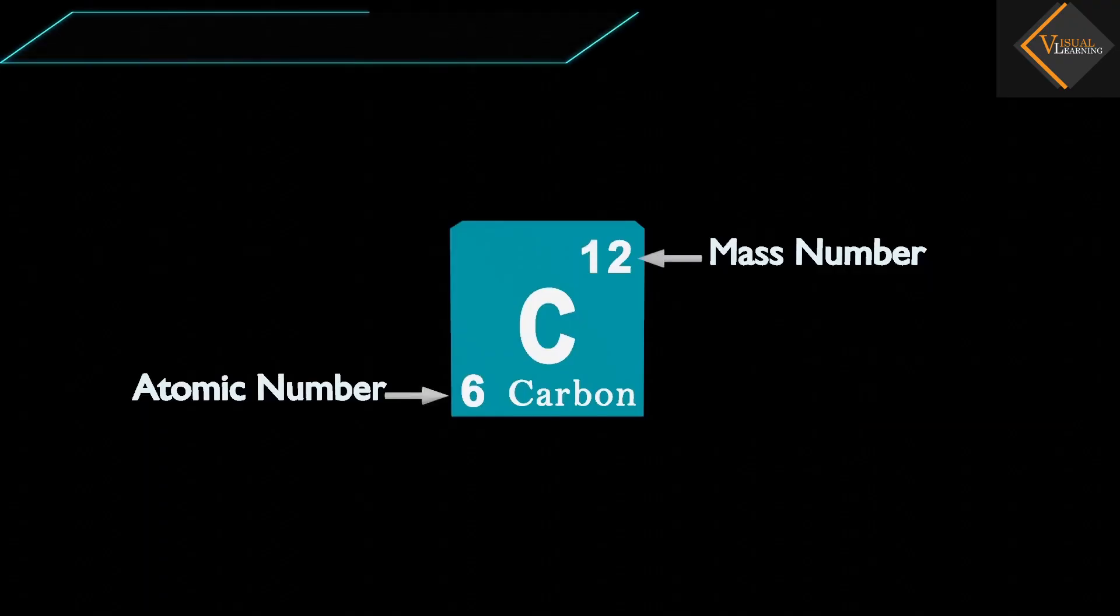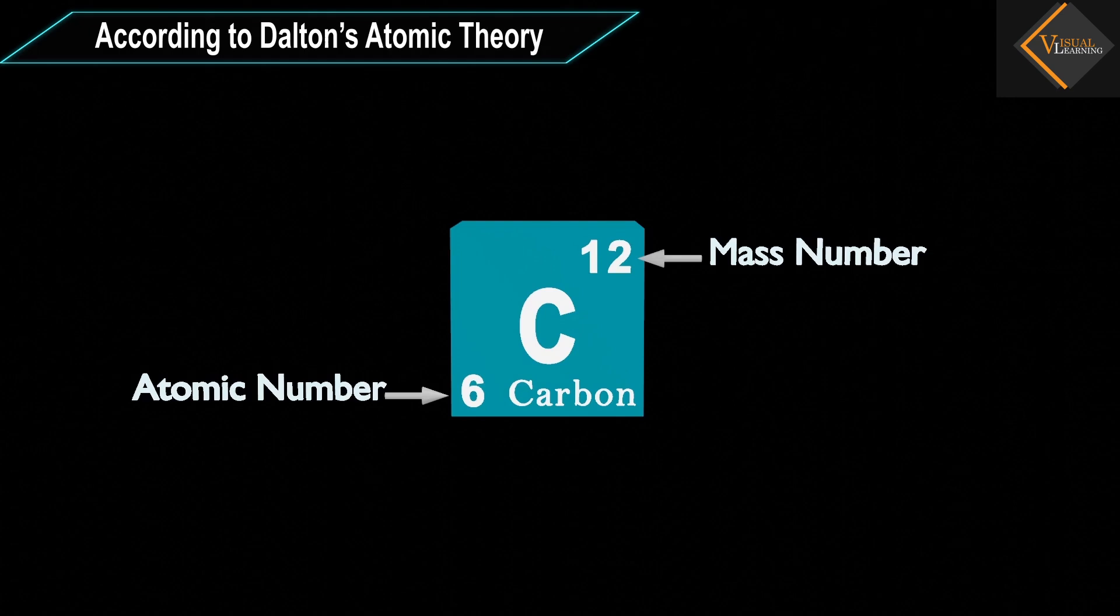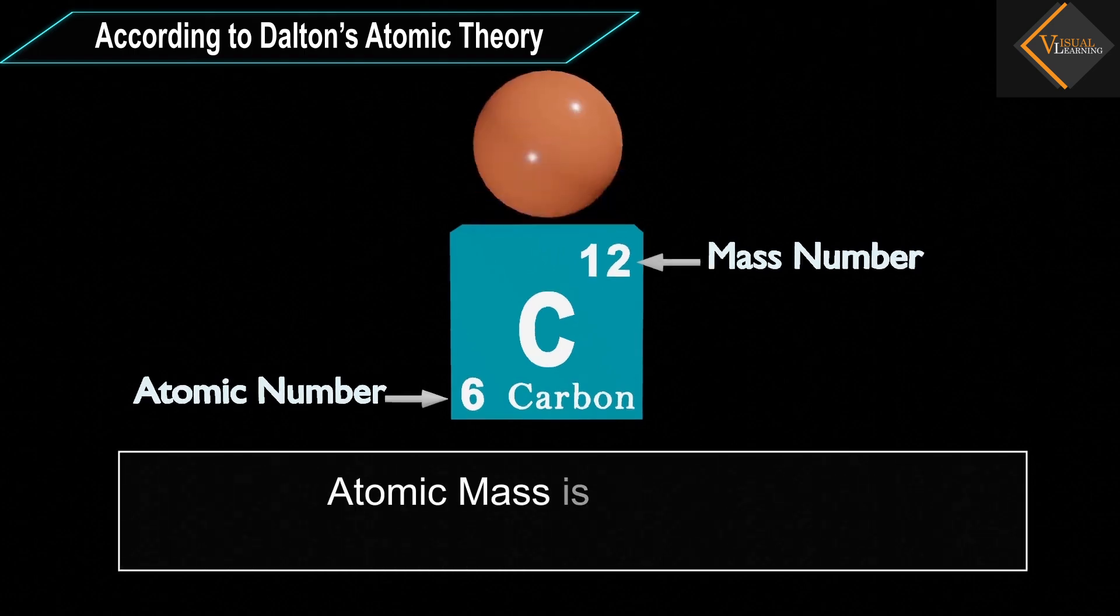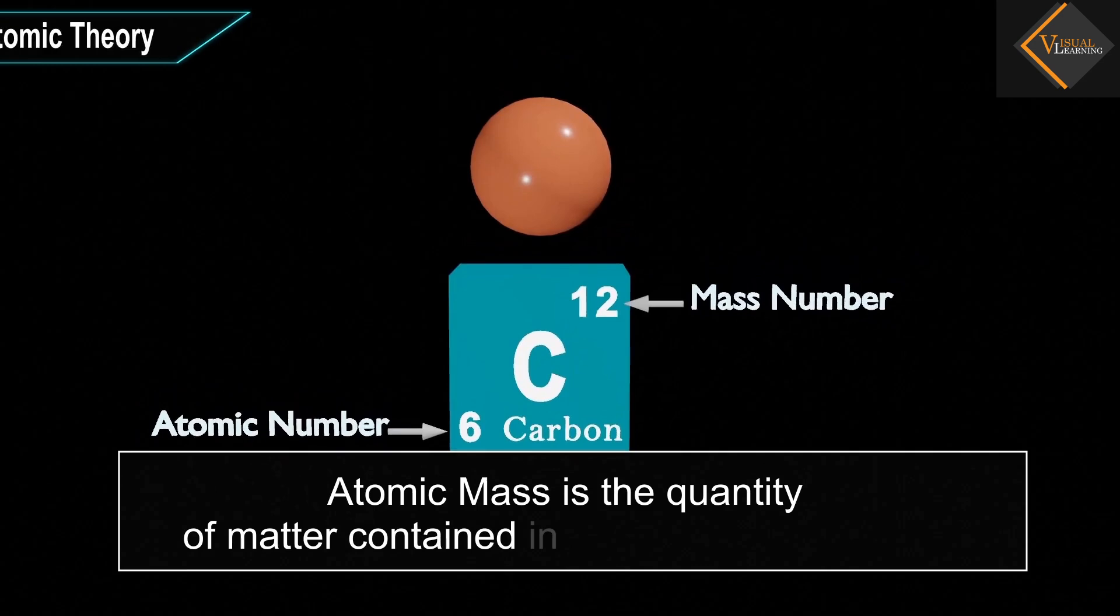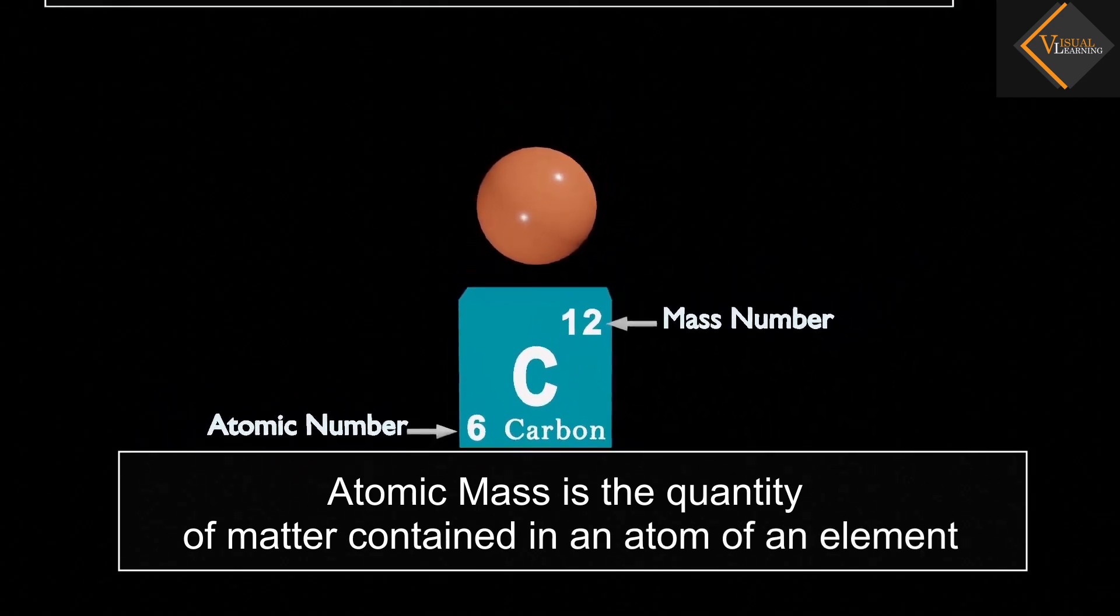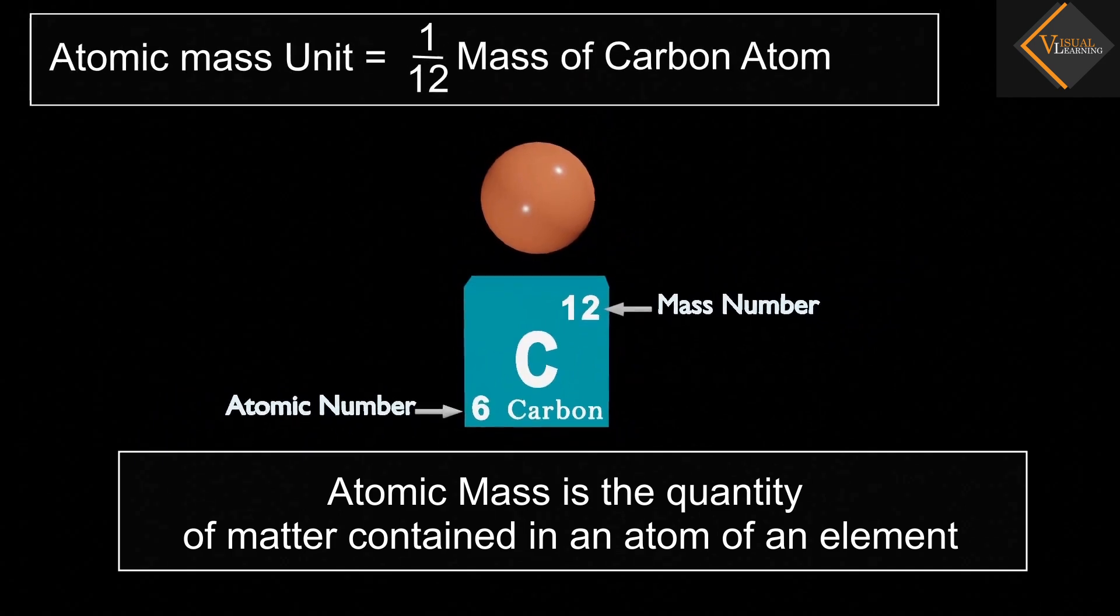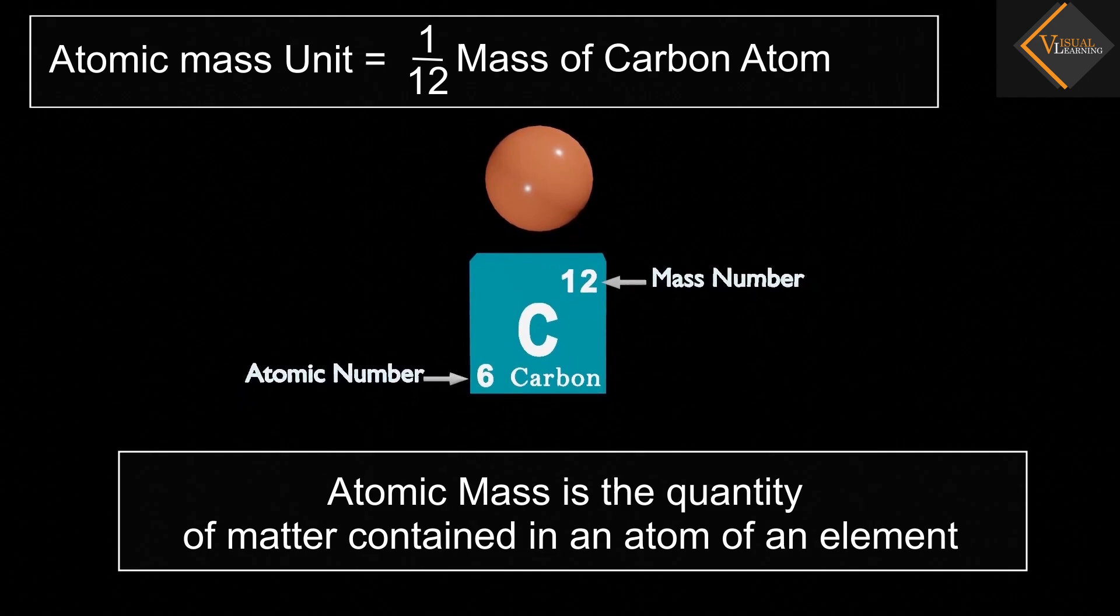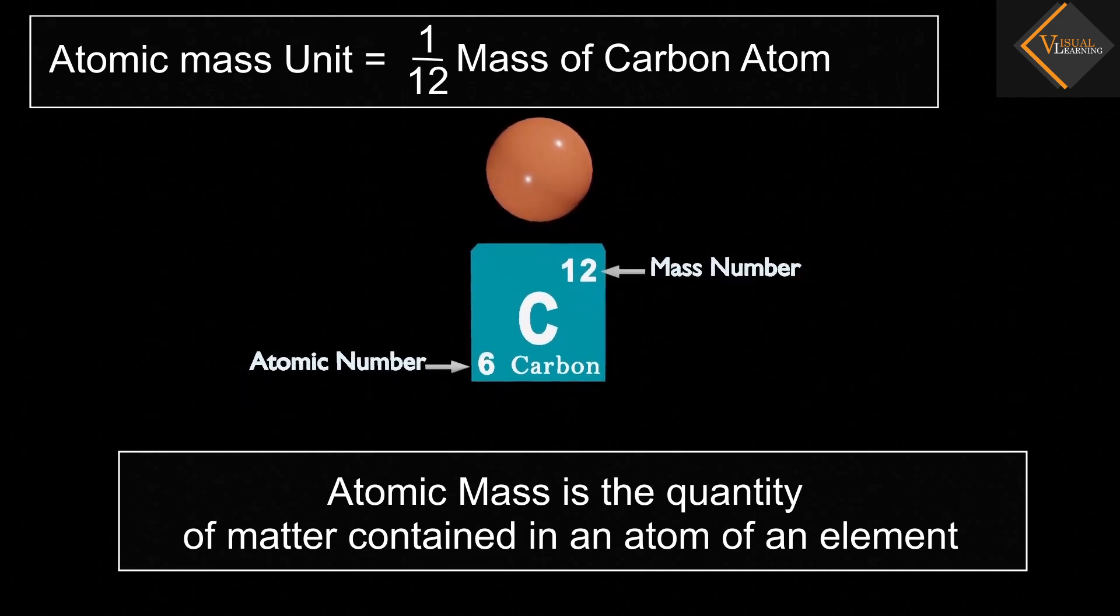According to Dalton's atomic theory, each element has a characteristic atomic mass. Atomic mass is the quantity of matter contained in an atom of an element. It is expressed as a multiple of one-twelfth the mass of the carbon atom, which is assigned an atomic mass of 12 units.